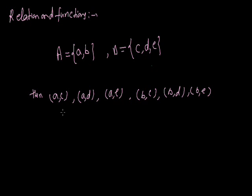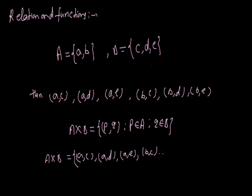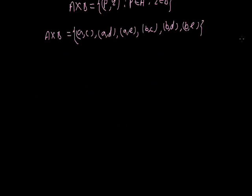We can say the Cartesian product of set A into B is exactly equal to {(P,Q) such that P belongs to A and Q belongs to B}. So here A into B is equal to {(A,C), (A,D), (A,E), (B,C), (B,D), (B,E)}. Two ordered pairs are equal if and only if both corresponding elements are equal.